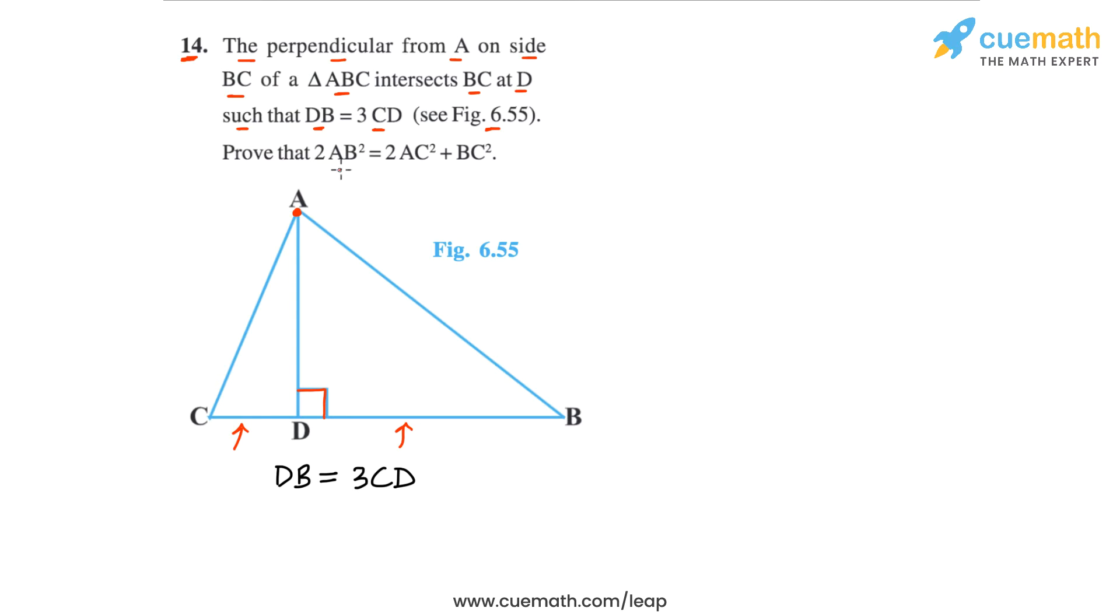We have to prove that twice of AB square, AB is this segment, is equal to twice of AC square plus BC square. AC is this segment and BC is of course the third side of triangle ABC. So we have to prove this equality.